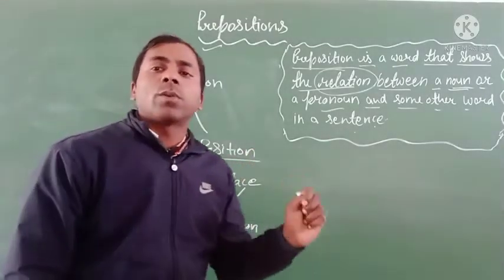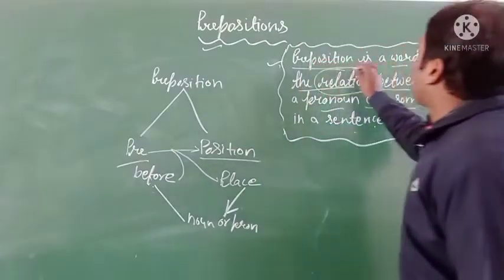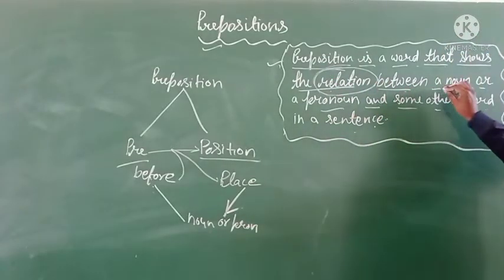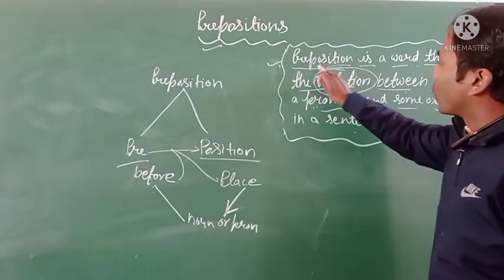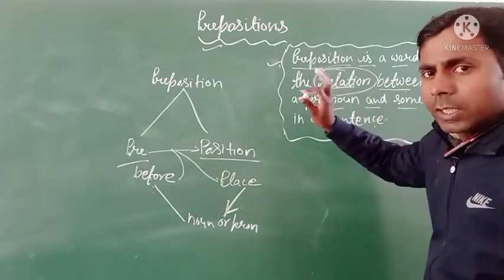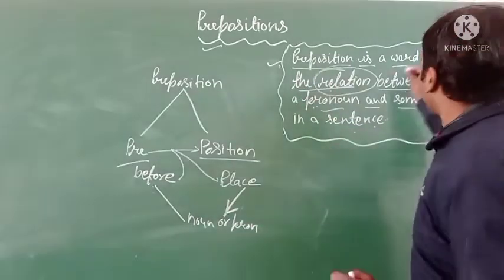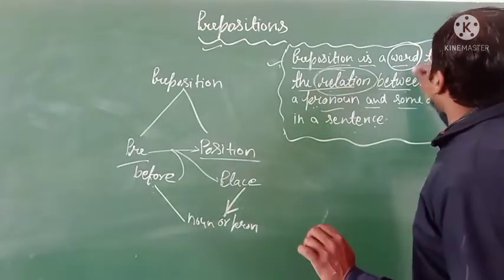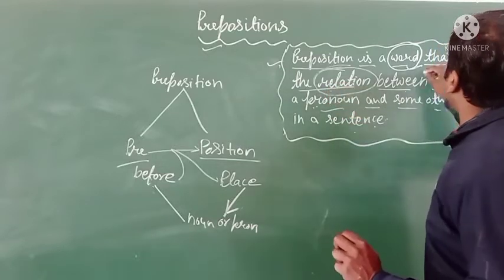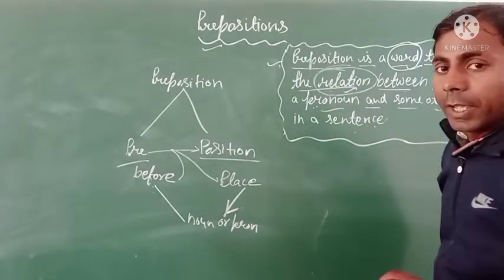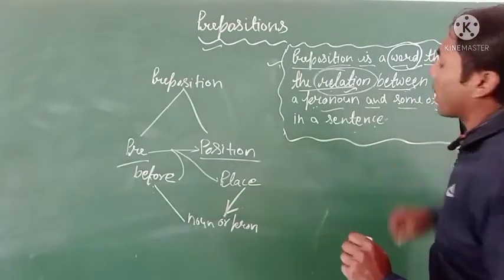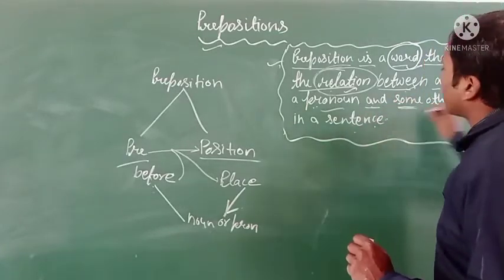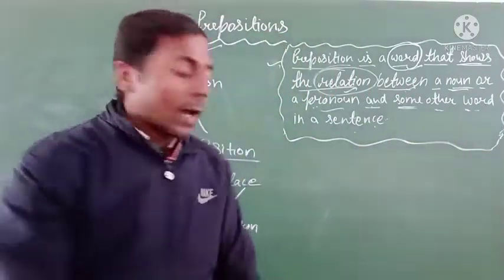It shows the relation. The definition of preposition: a preposition is a word that shows the relation between a noun or pronoun and some other word in a sentence. It is only a word that shows the relation between a noun or pronoun and some other word in a sentence. Let me give some examples.